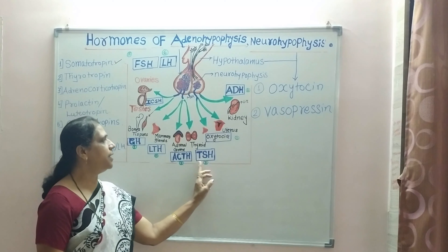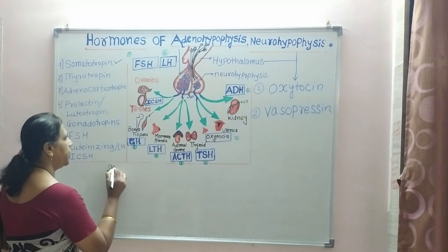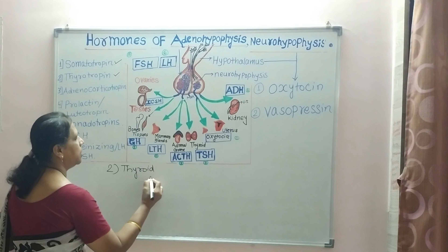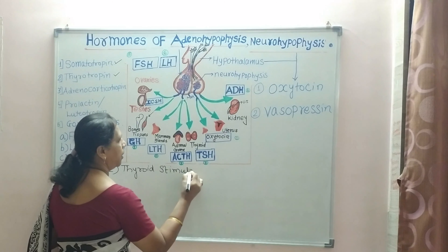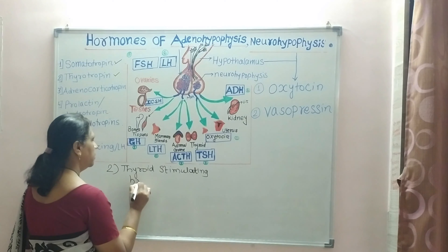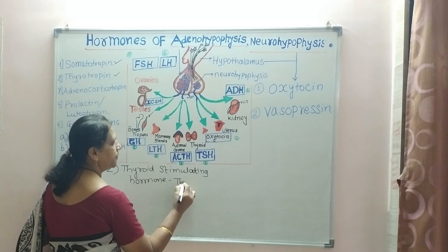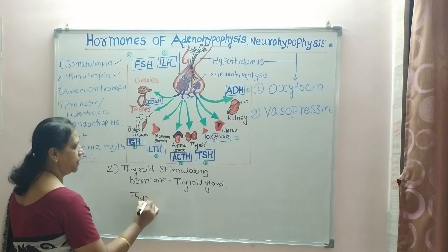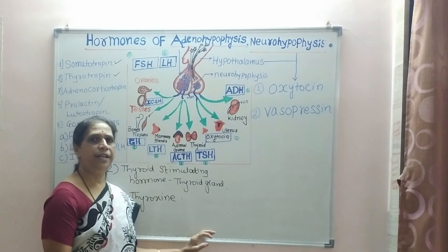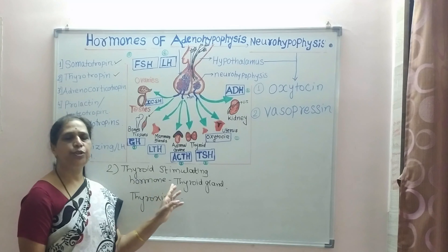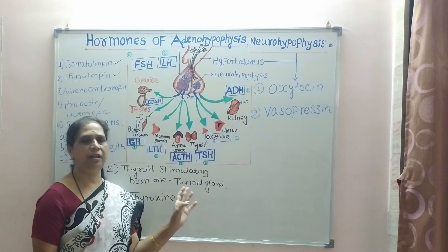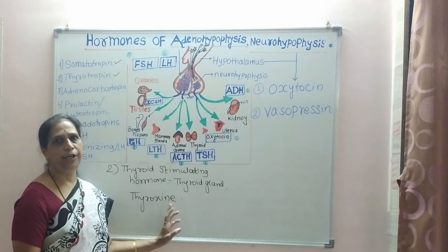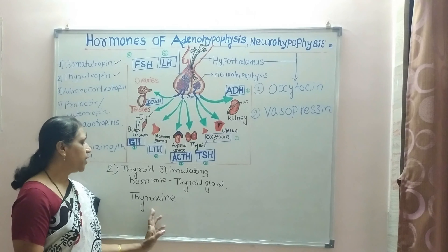The second hormone secreted by the anterior pituitary is TSH — thyroid stimulating hormone, also called thyrotropin — as it acts on the thyroid gland. The thyroid gland secretes the hormone thyroxine and maintains iodine levels in the blood. The detailed morphological and anatomical structure of the thyroid gland will be covered in the next lecture.